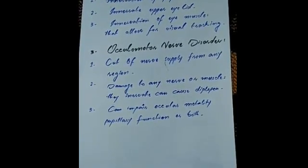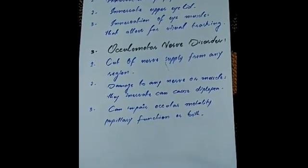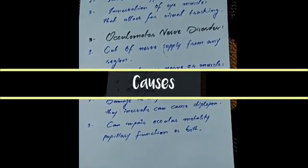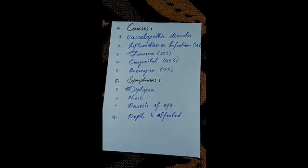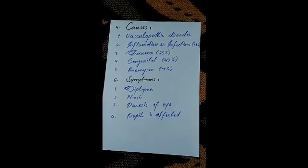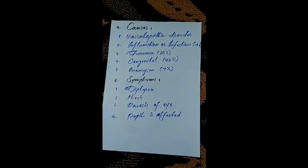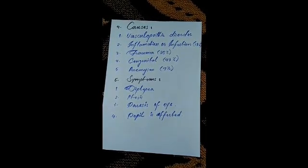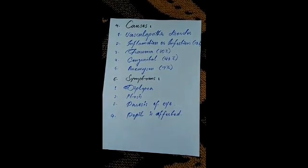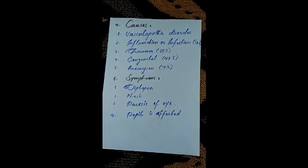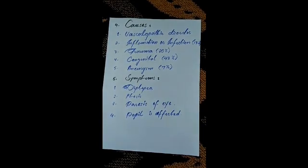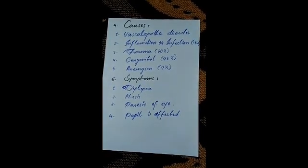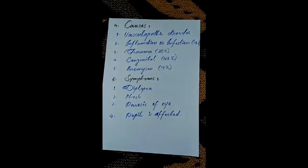Oculomotor nerve disorder impairs ocular motility and pupil function. The causes are: vasculopathic disorder, meaning heart disease or diabetes; inflammation or infection, which accounts for 13 percent; trauma; congenital causes due to increased intracranial pressure during embryological development; and aneurysm.